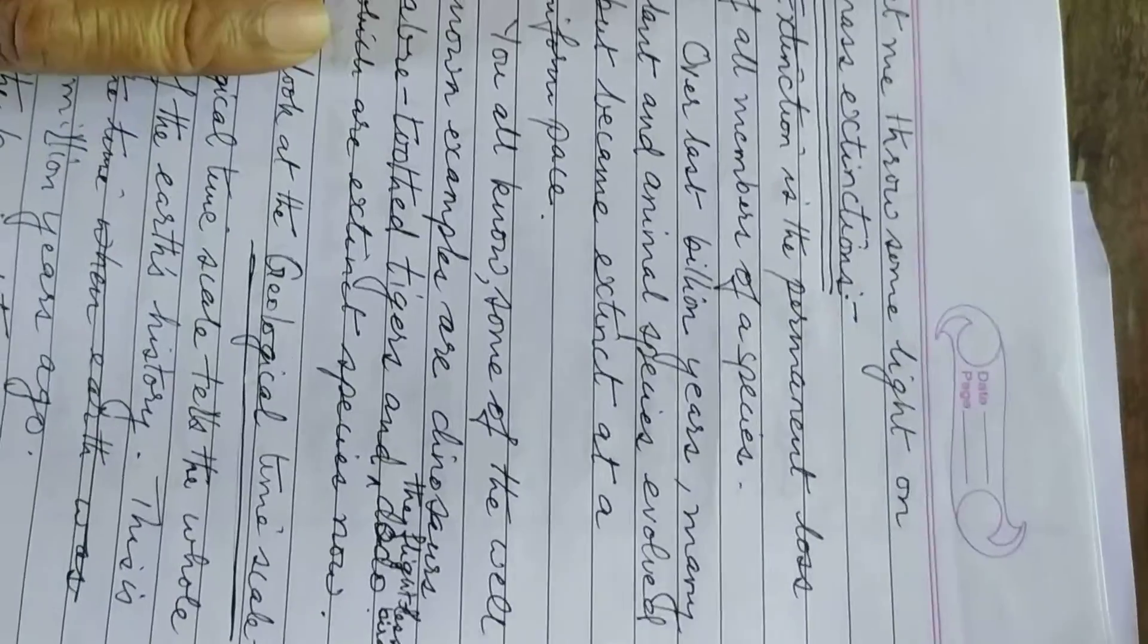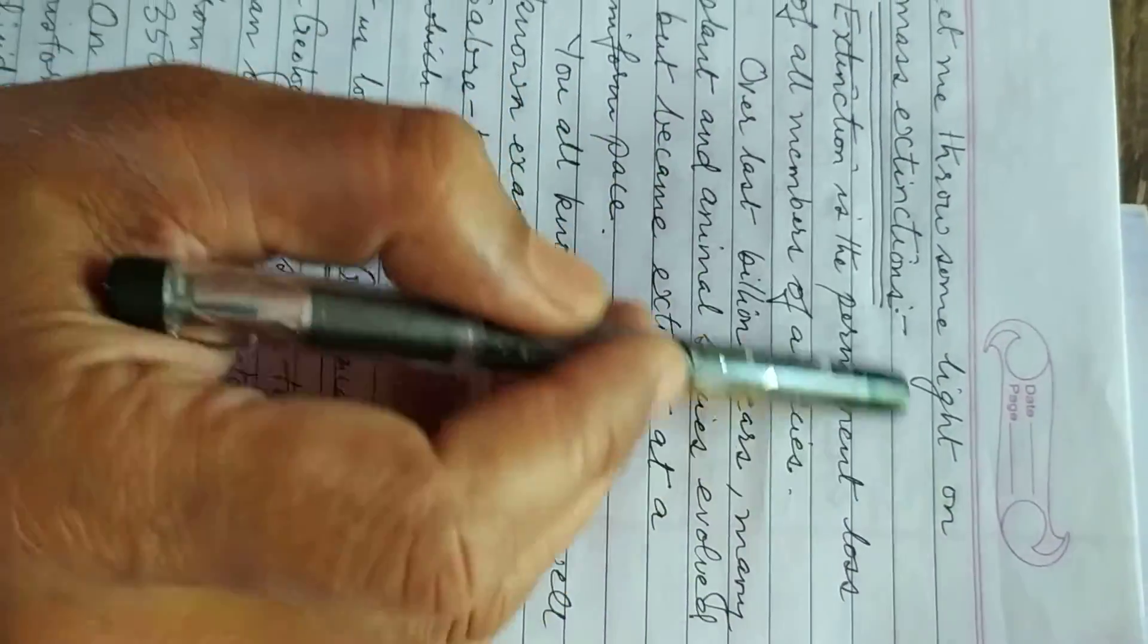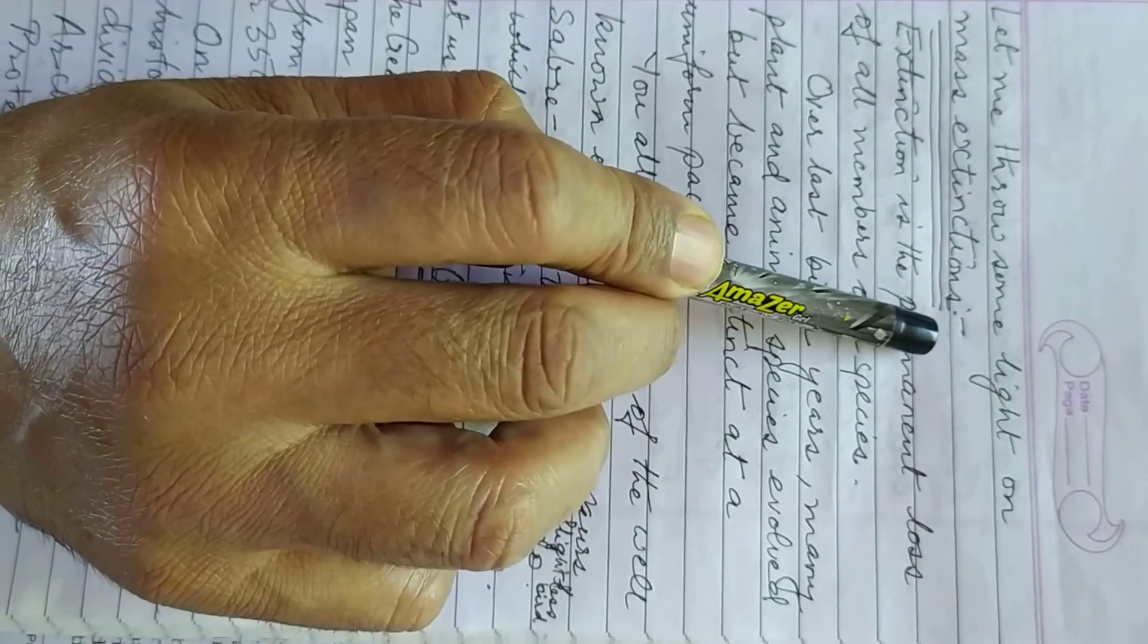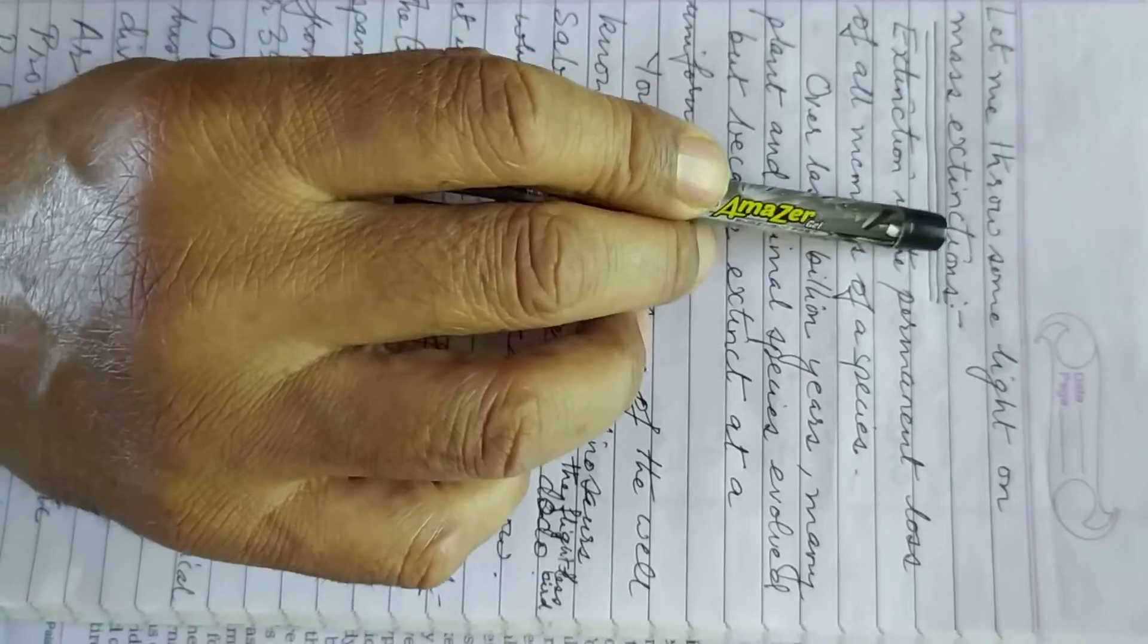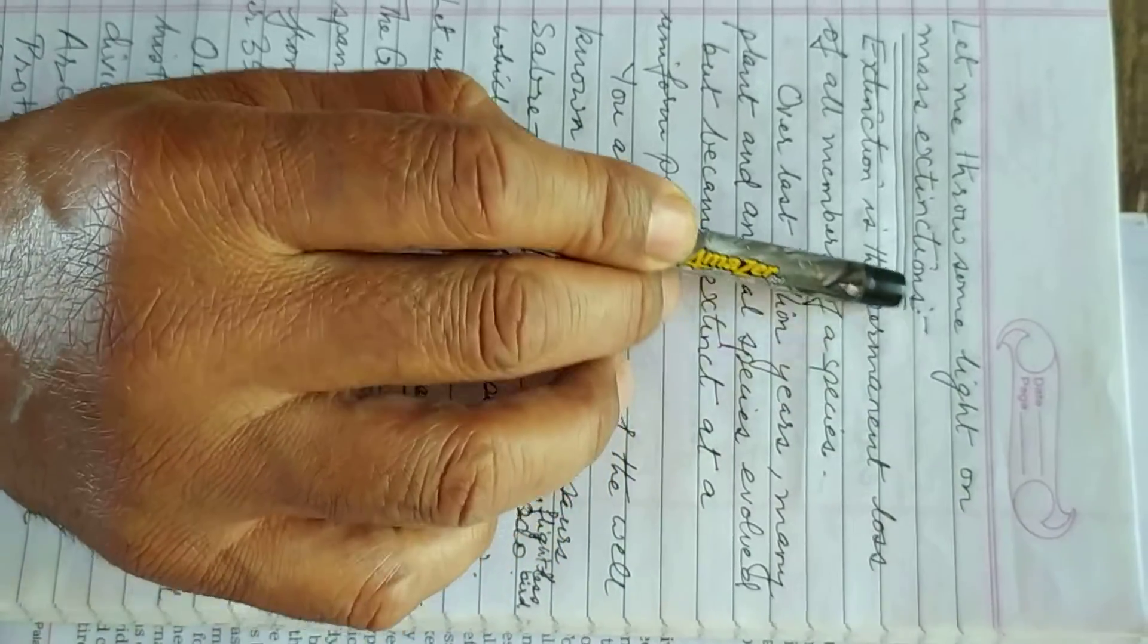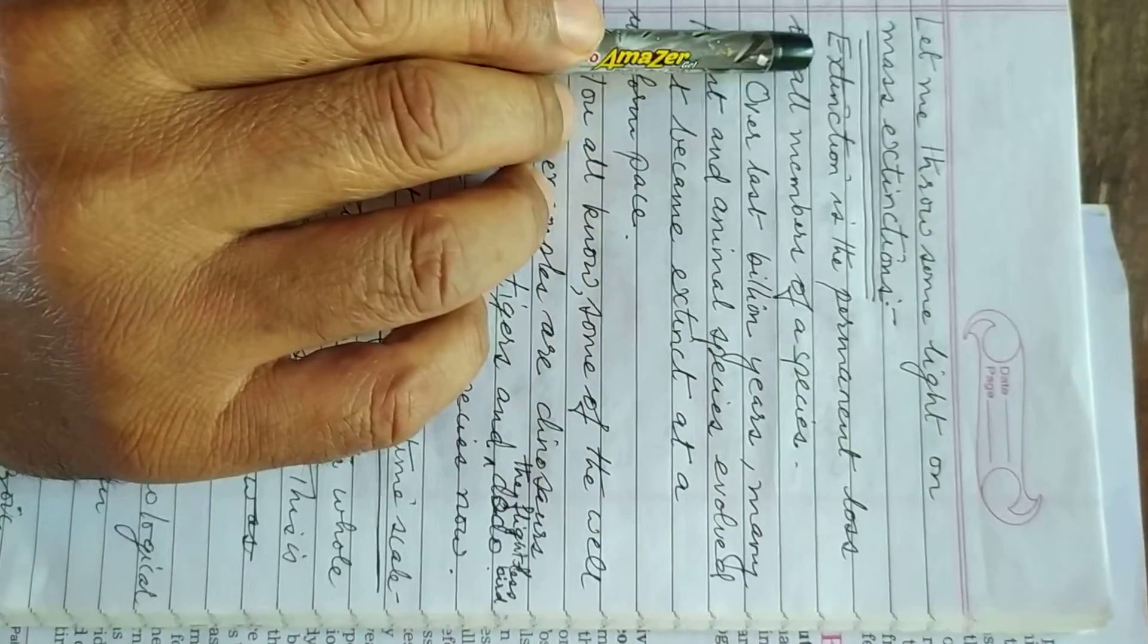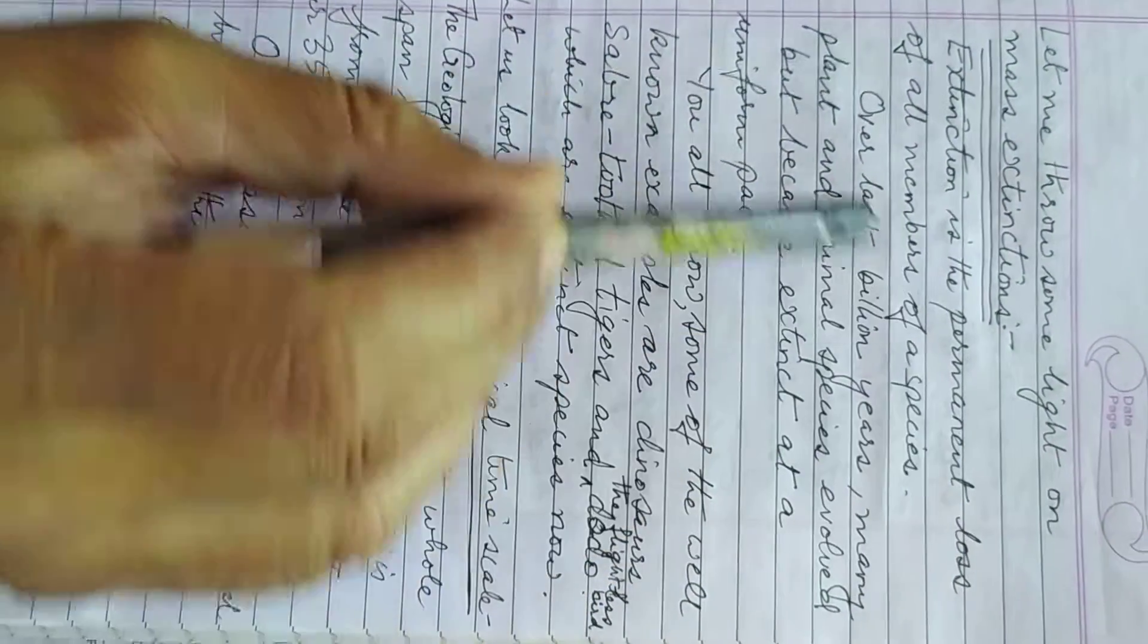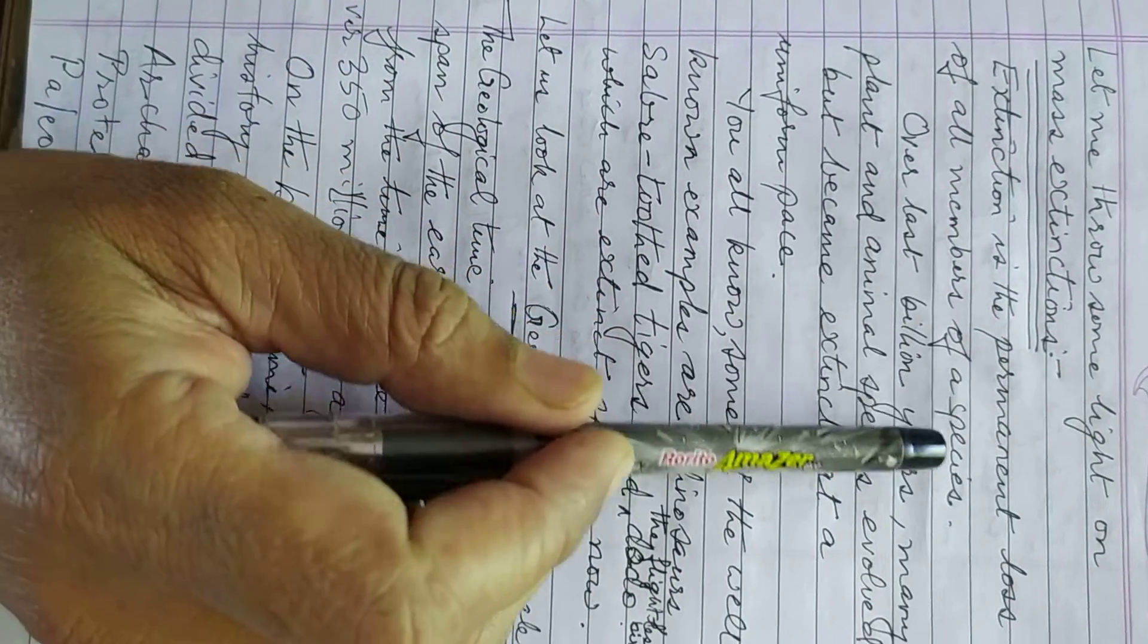Having said that, let me throw some light on mass extinctions. Extinction is the permanent loss of all members of a species.